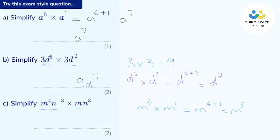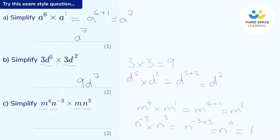Now let's look at the n's. We've got n to the power of negative three multiplied by n to the power of positive three. Again, the laws of indices tell me to add those powers — so negative three plus three. Thinking of the number line, negative three plus three is going to be zero, so this is just n to the power of zero. And n to the power of zero is one — anything to the power of zero is one. So the answer is m to the power of five multiplied by one, which is just m to the power of five.